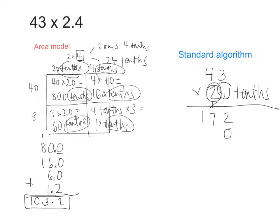2 times 3 is 6. 2 times 4 is 8. Now let's add our partial products. 2 plus 0 is 2. 7 plus 6 is 13. We'll regroup the 1. 1 plus 1 plus 8 is 10.